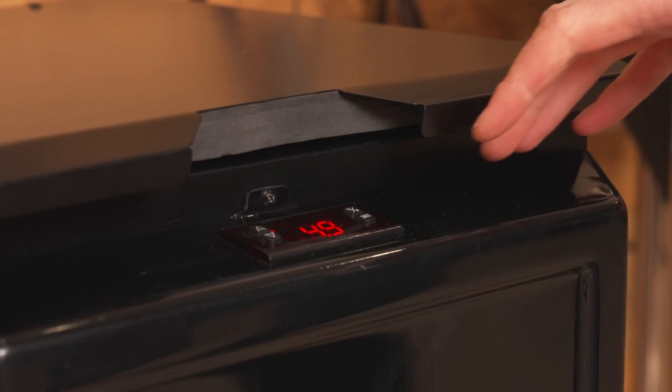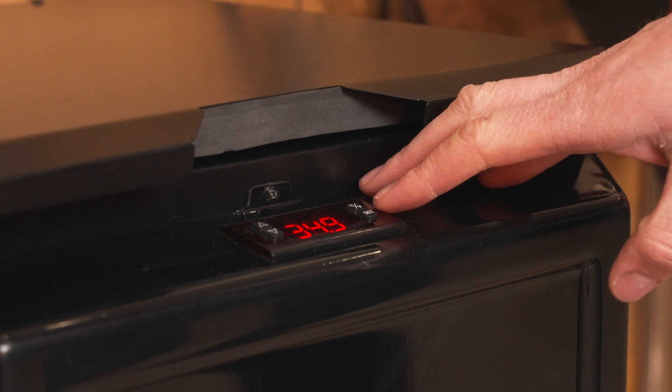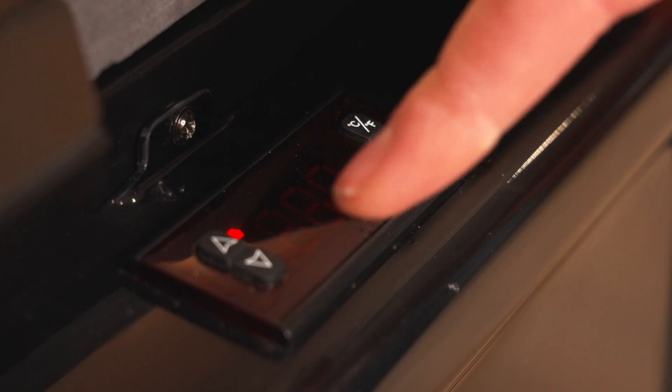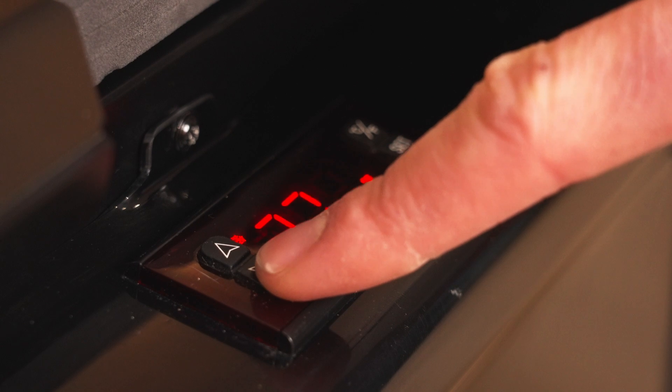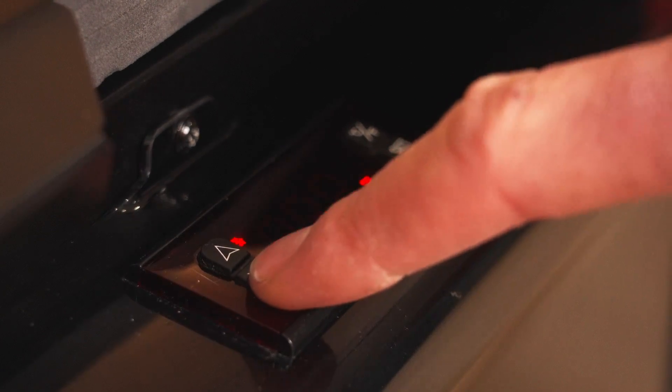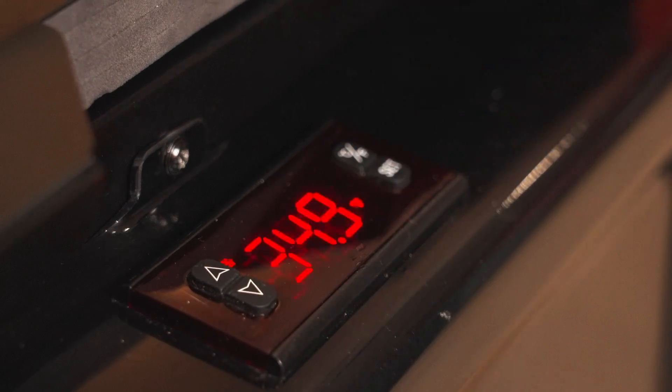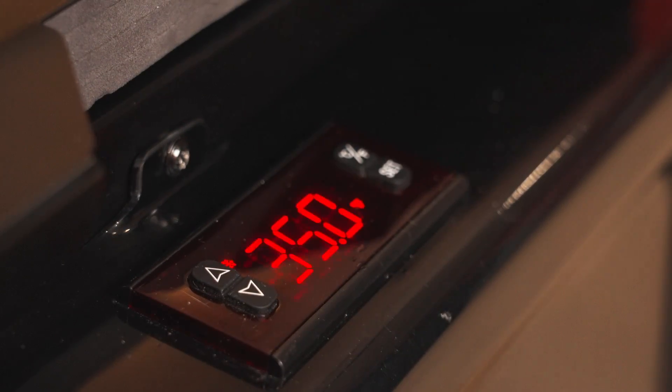To set the reservoir temperature, press the Set button on the control panel. The temperature setting should start blinking. Use the arrow keys to change the temperature up or down to your desired value. When you're ready, press the Set button again to lock in the set temperature.